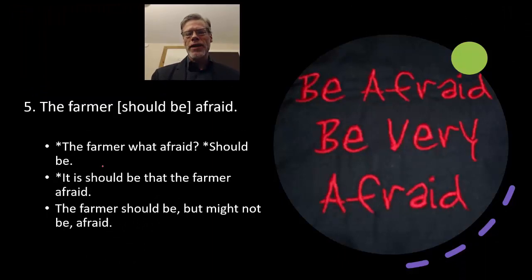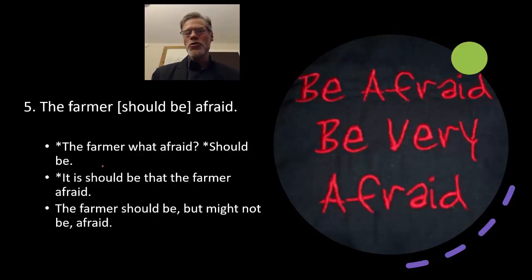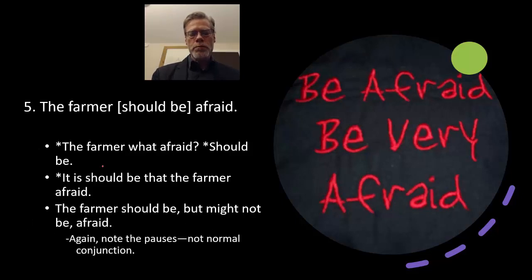The last example: 'the farmer should be afraid' — testing whether should be is a constituent. Question: The farmer what afraid? Should be — no. It-cleft: It is should be that the farmer afraid — awful. Conjunction: The farmer should be, but might not be, afraid — that sounds okay, but note the required pauses. It can't be said fluidly. So it's not normal conjunction — a false positive that we can explain away. Therefore should be is not a constituent in that sentence.